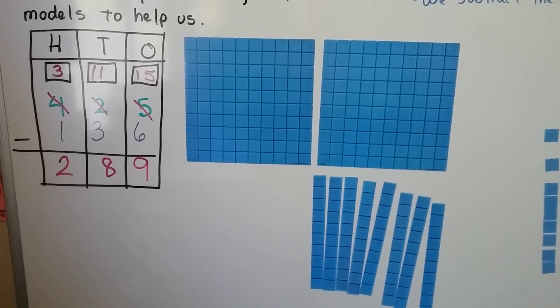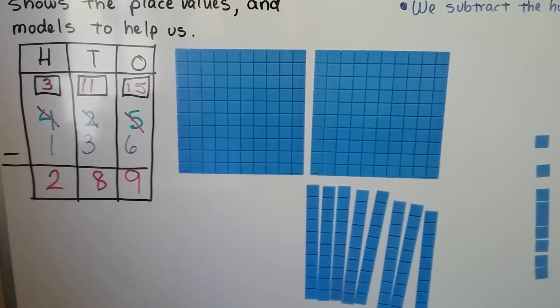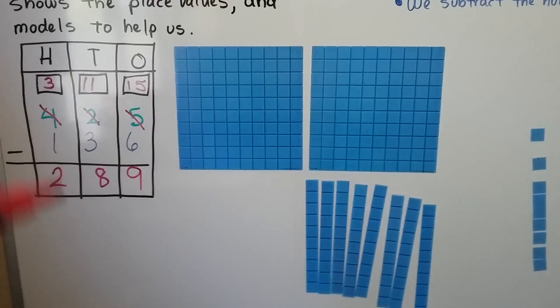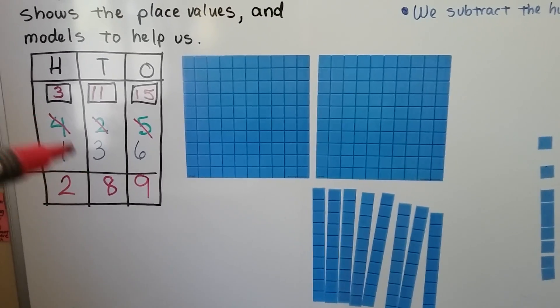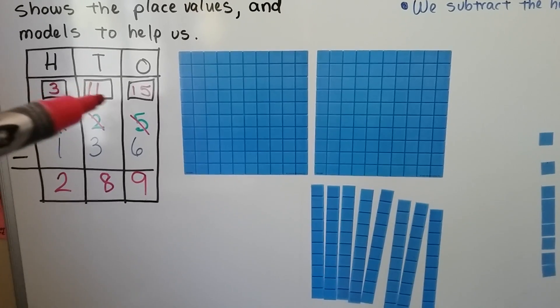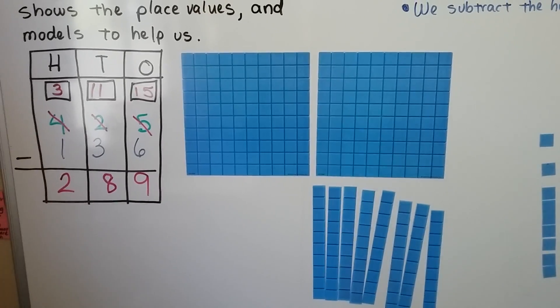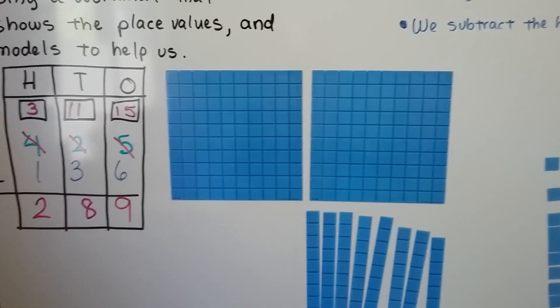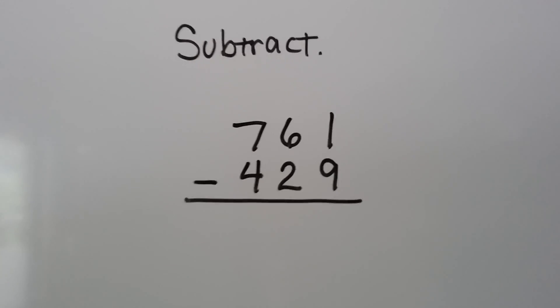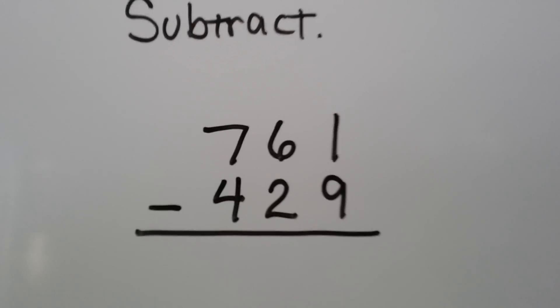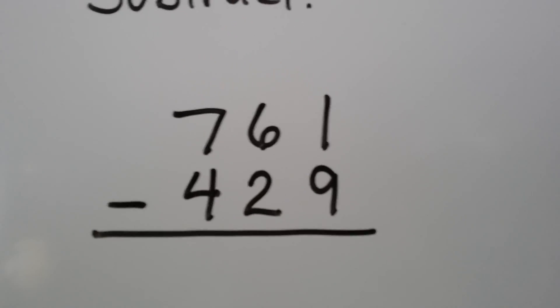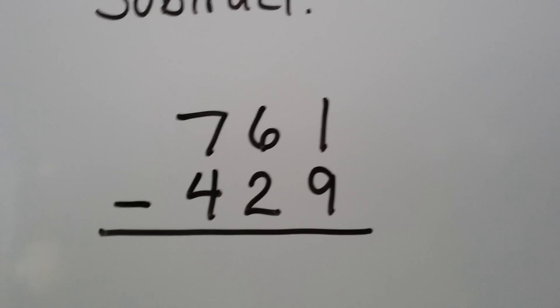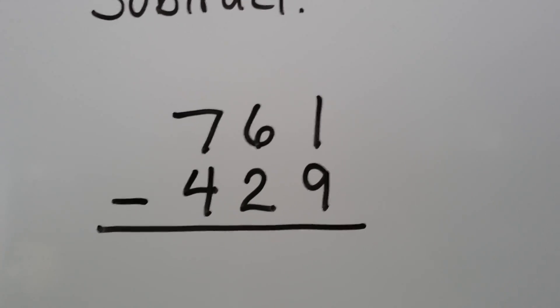So if you need to use models, that's okay. And you can use a workmat like this that has little boxes for your regrouping. So let's see if we can subtract these. We have 761 and we need to take away 429.